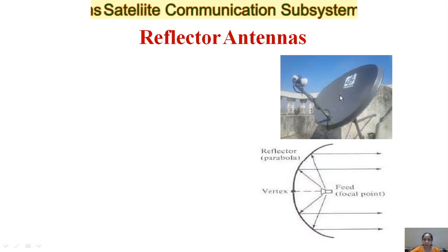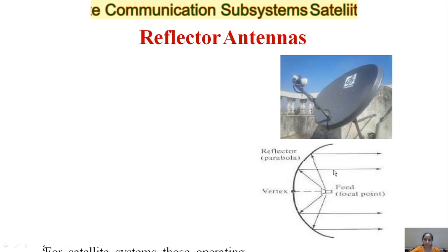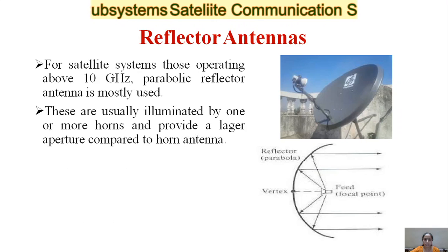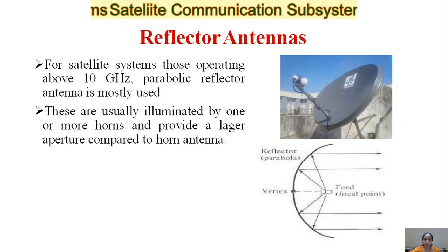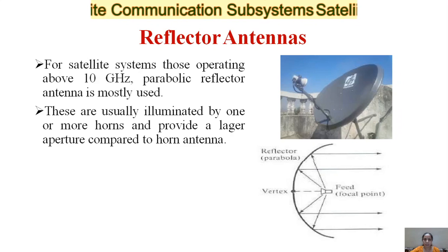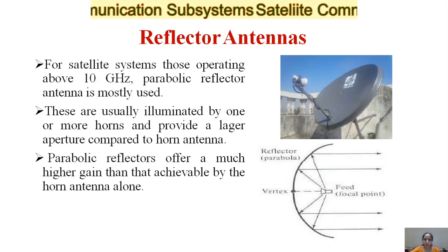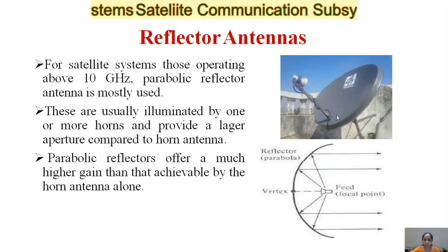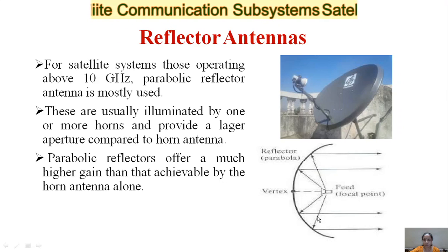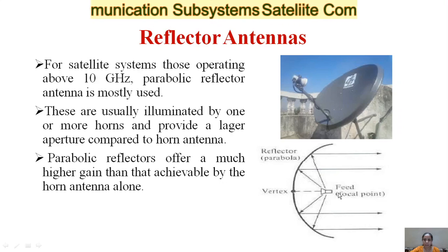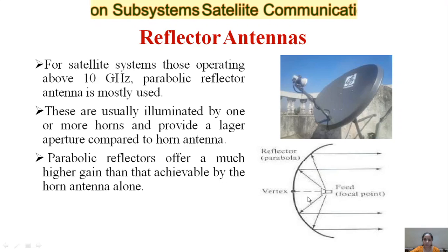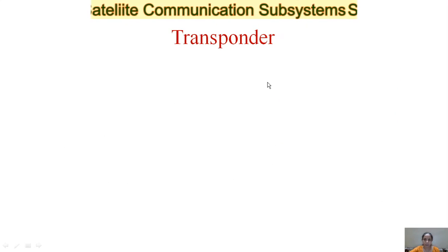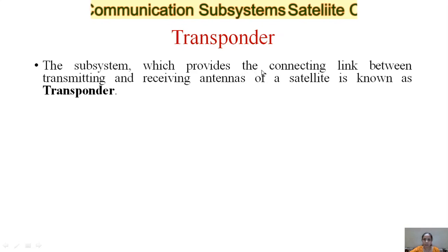The fourth type is the reflector antenna. In satellite systems operating above 10 GHz, a parabolic reflector antenna is mostly used. These are usually illuminated by one or more horns and provide a large aperture compared to the horn antenna. Parabolic reflectors offer much higher gain than is achievable by the horn antenna alone. In the figure, we can see the parabolic reflector, the feed point, and the vertex. This antenna provides very high gain compared to other antennas.